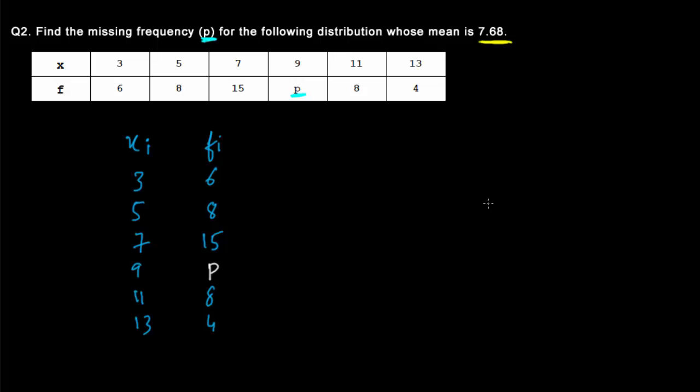Now let's write down the formula of the mean. X bar equals summation of fi times xi divided by summation of fi. Let's create a column fi times xi where we simply multiply the values. 6 into 3 is 18, 5 into 8 is 40, 7 into 15 is 105, 9 into p is 9p, and we have 88 and 52.